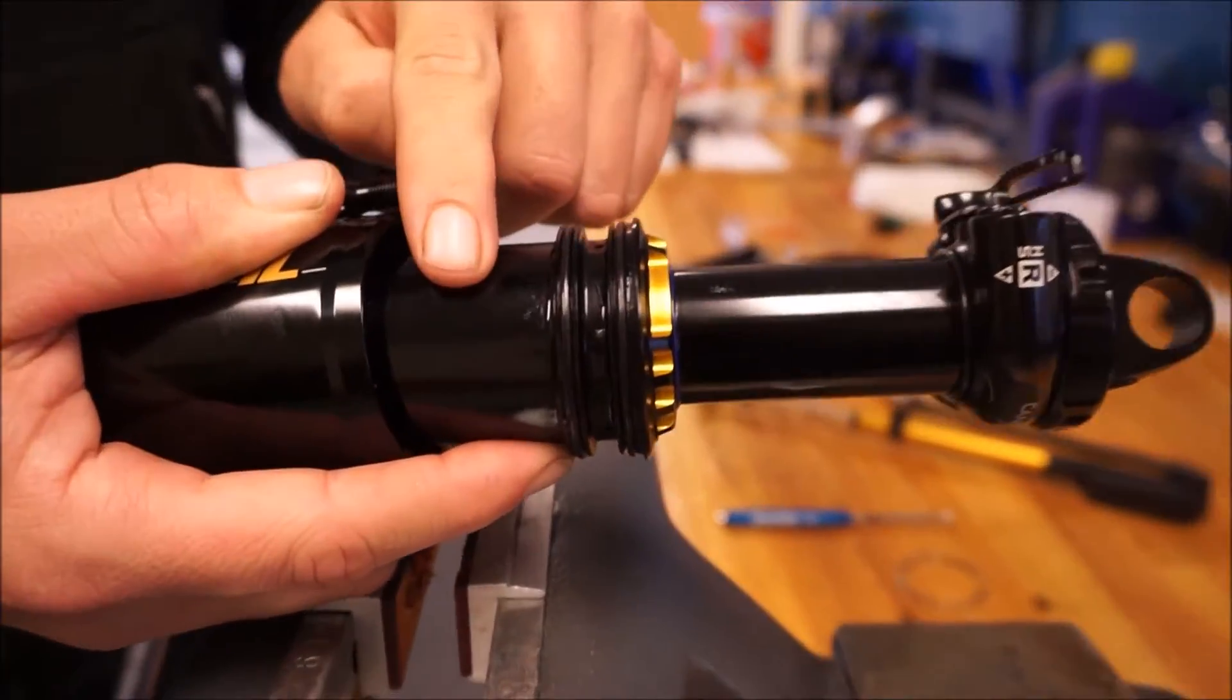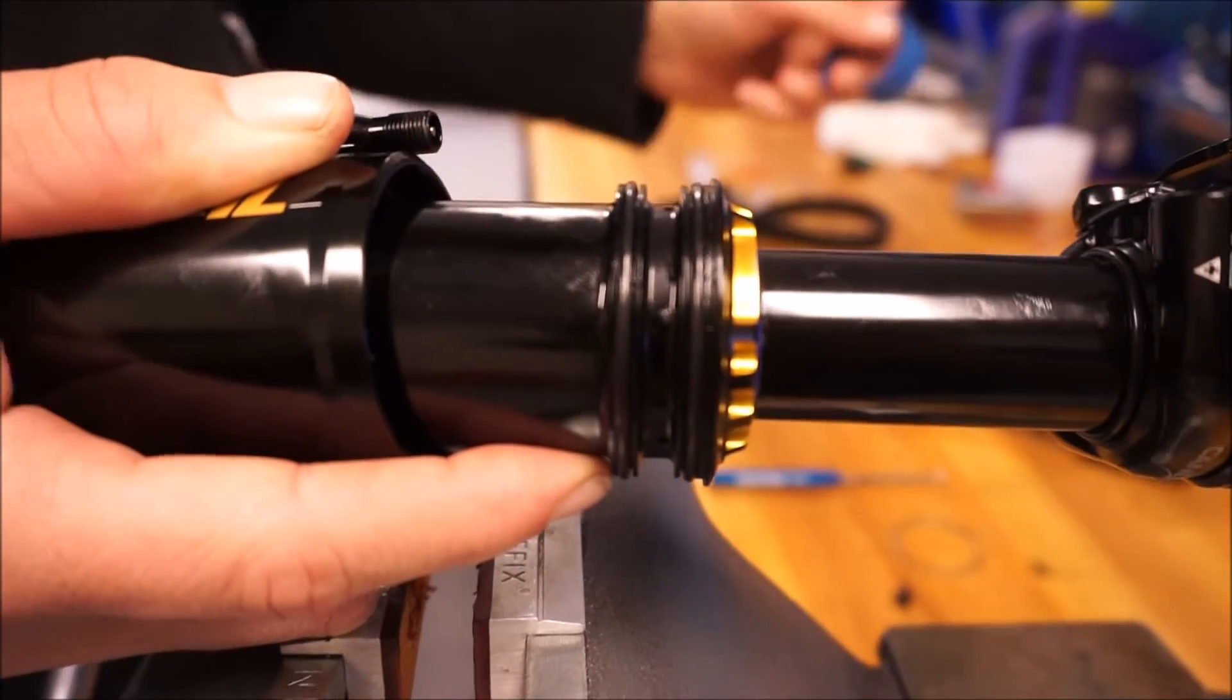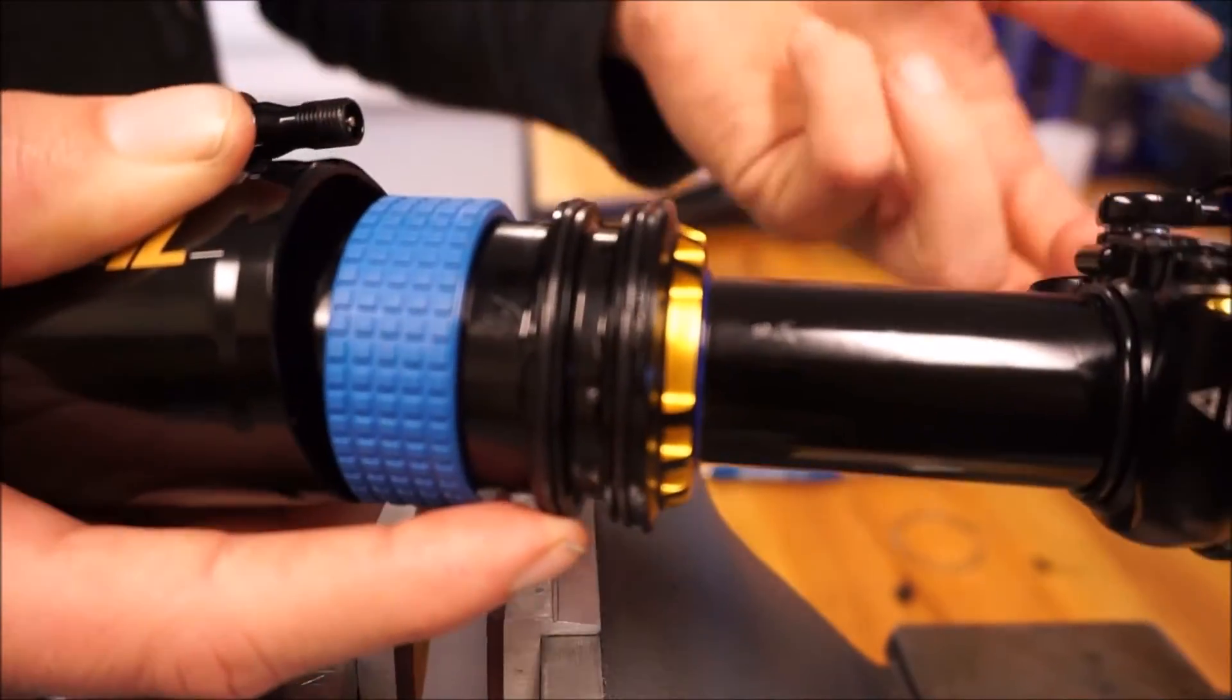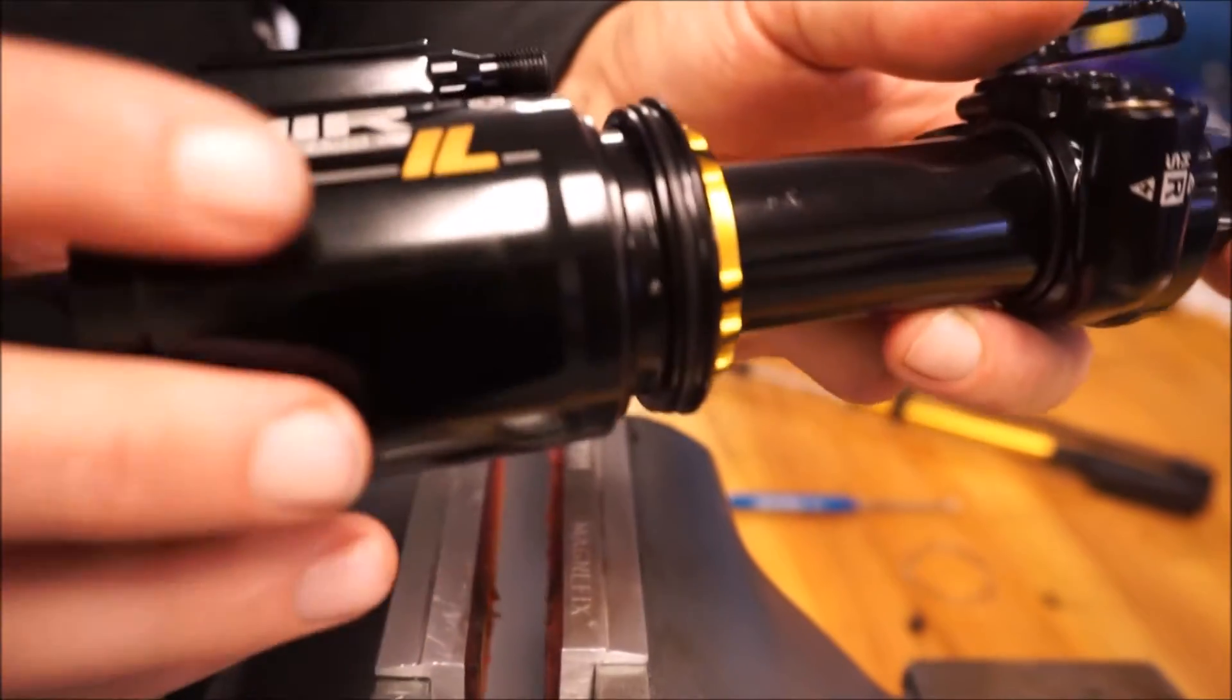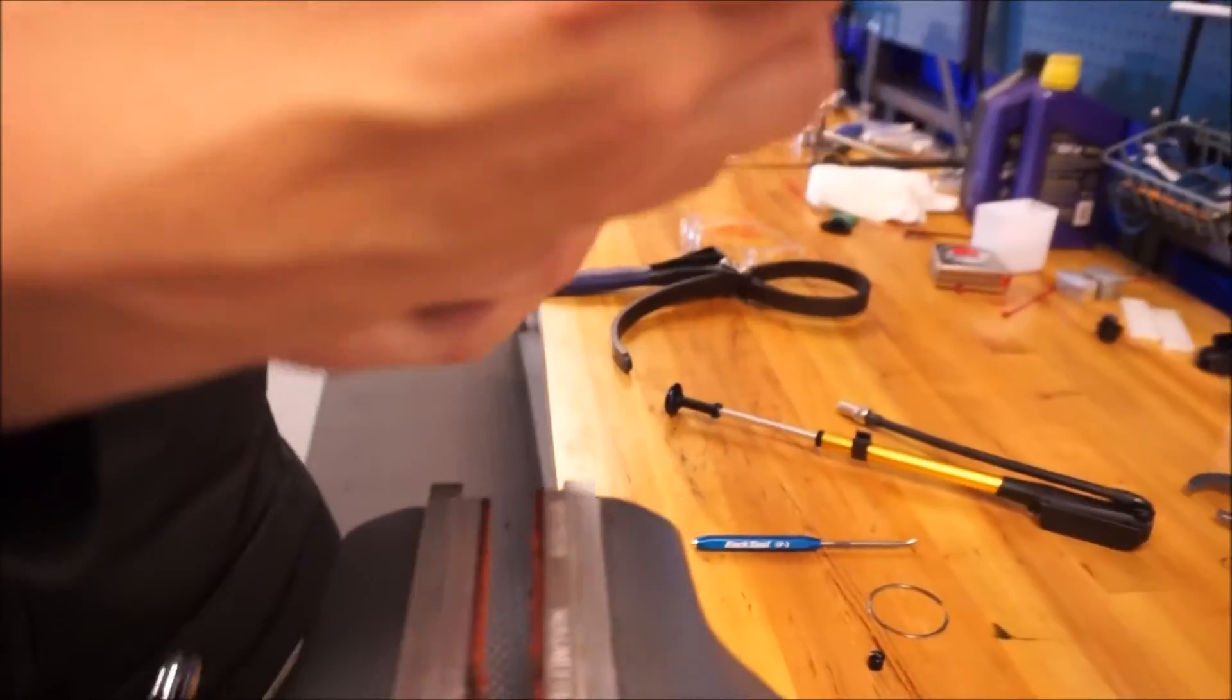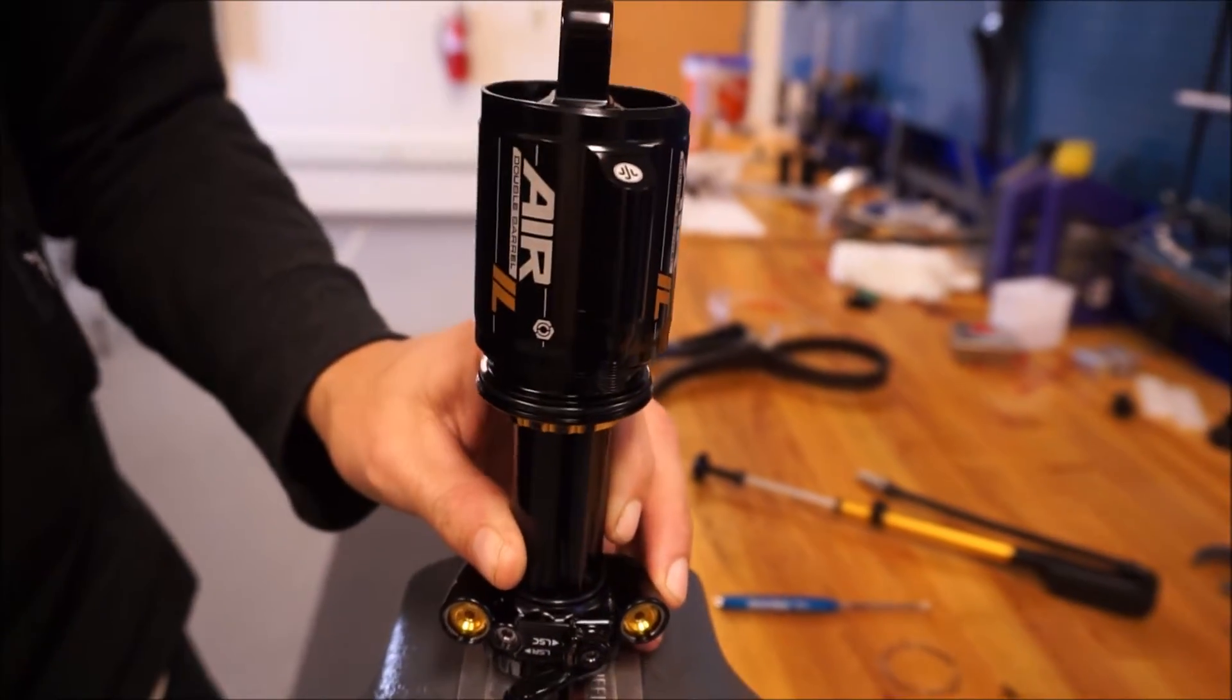Your volume spacer is going to go in right here. Just put it right up against the O-ring and put the shock back in the vise.